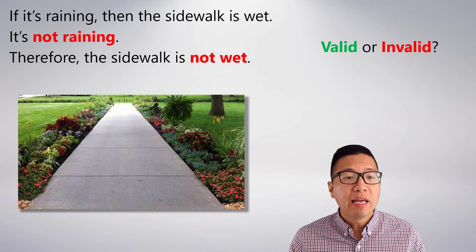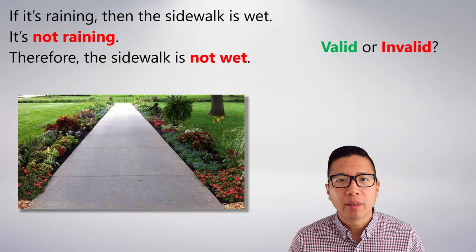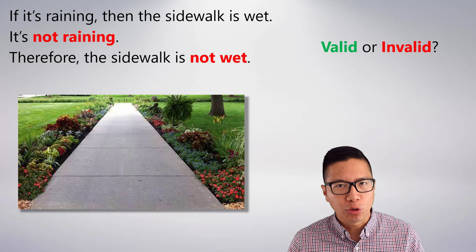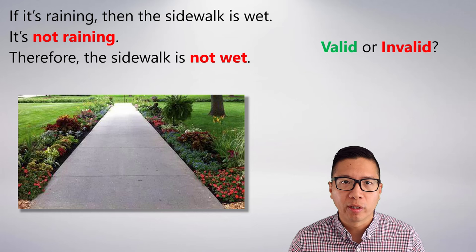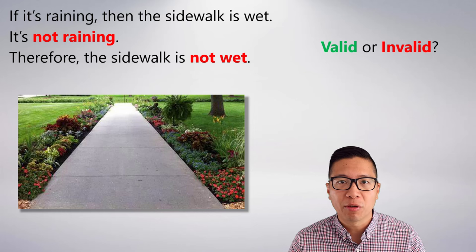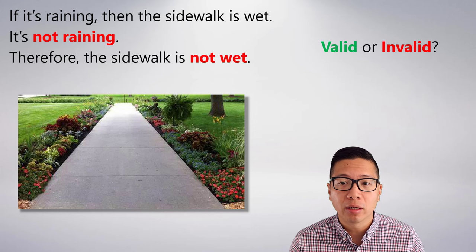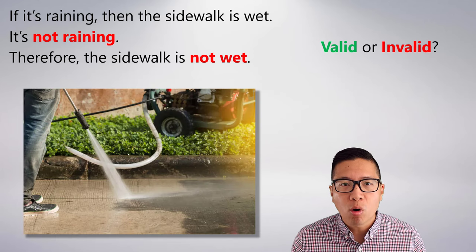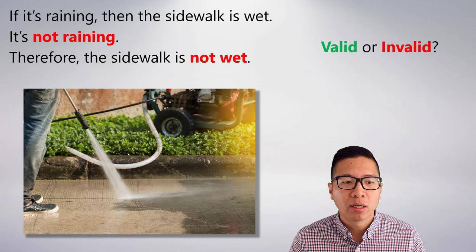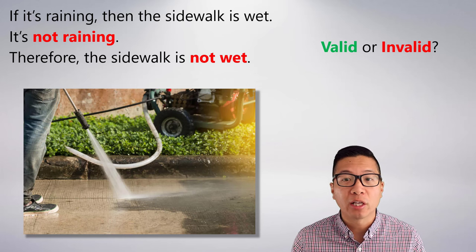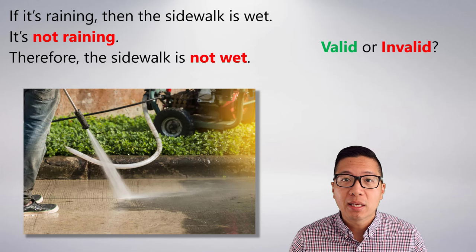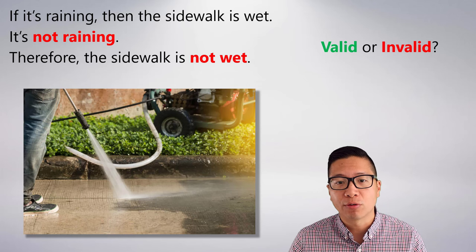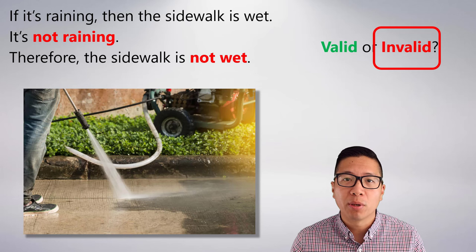Here's another example. 'If it's raining, then the sidewalk is wet' — the same first premise as before. But the second premise is: 'It's not raining. Therefore, the sidewalk is not wet.' Is this valid or invalid? Assume the premises are true — does the conclusion follow? We've all seen reasons why a sidewalk is wet even though it's not raining, like a person who washes their sidewalk. If you wash your sidewalk, it could be the case that it's not raining and the sidewalk is actually wet, which means the premises are true and the conclusion is false. So from this example, we can conclude that this argument is invalid.